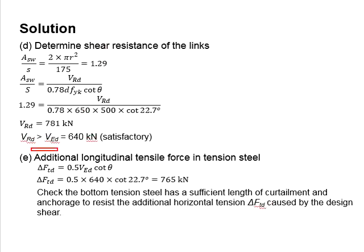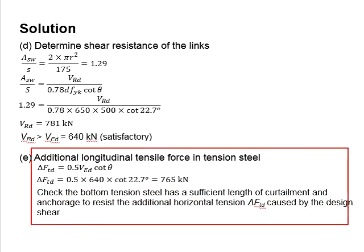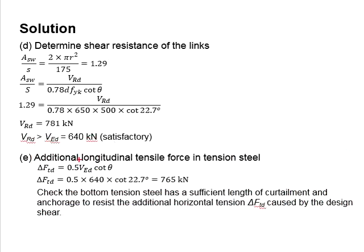Next, you need to check for the additional longitudinal tensile force in the tension steel using this equation. You will know it will generate an additional tensile force of 765 kN. You need to check whether the bottom steel bar is sufficient to provide resistance to this additional longitudinal force.